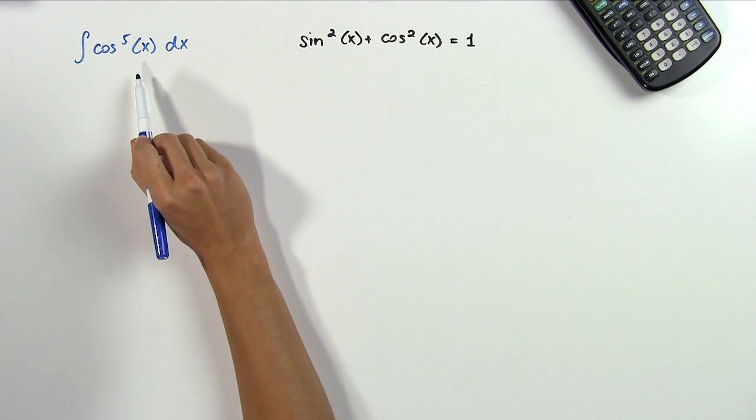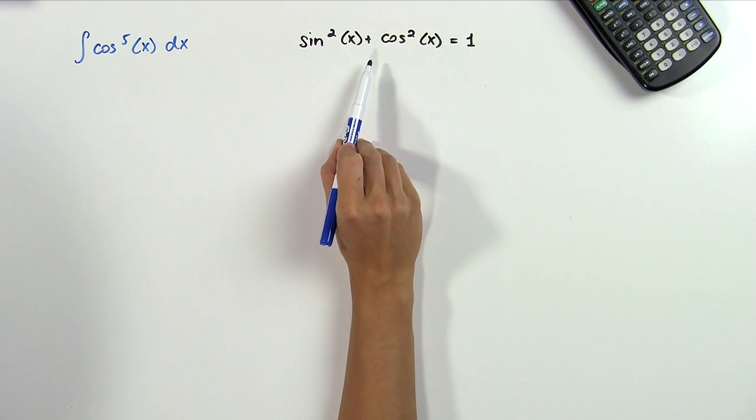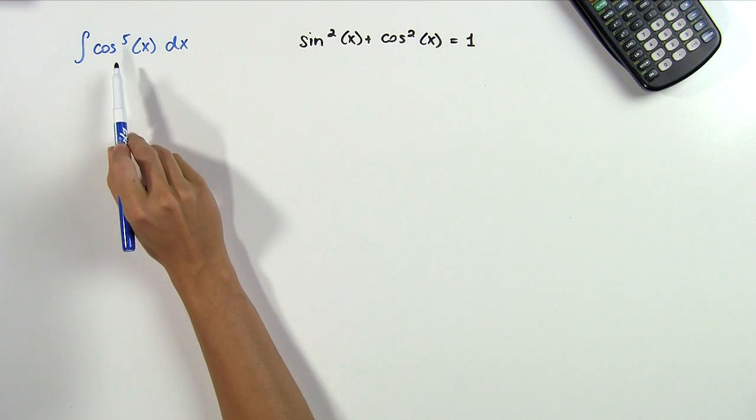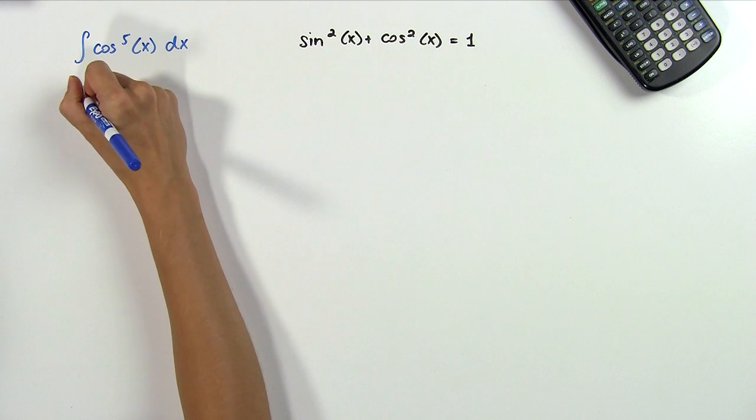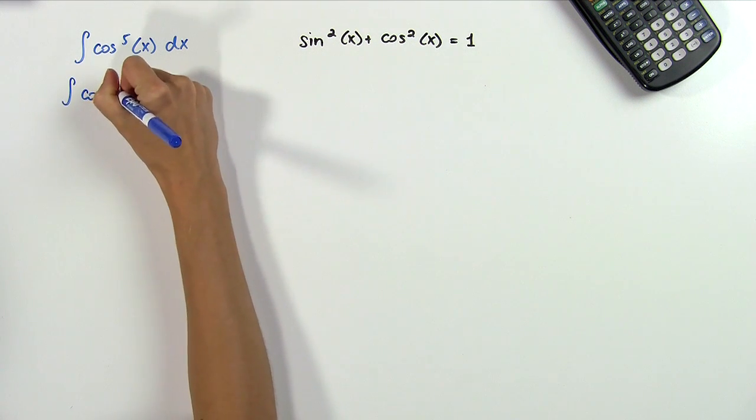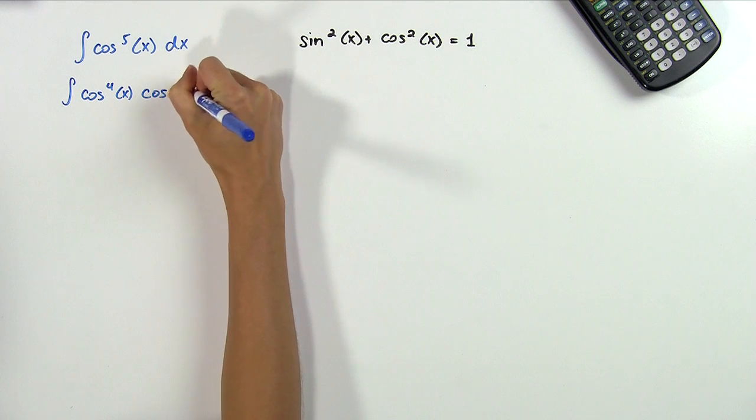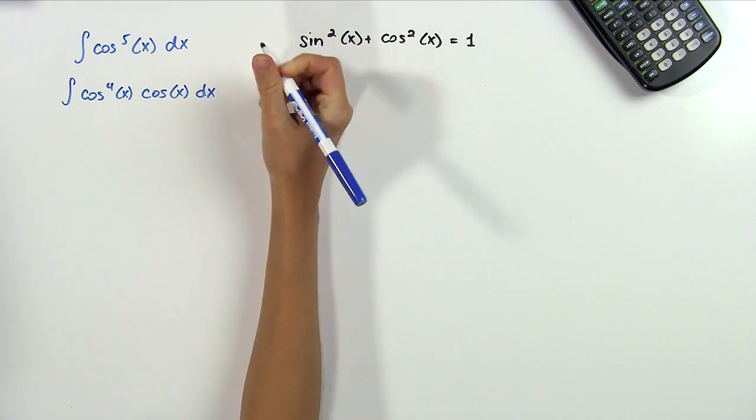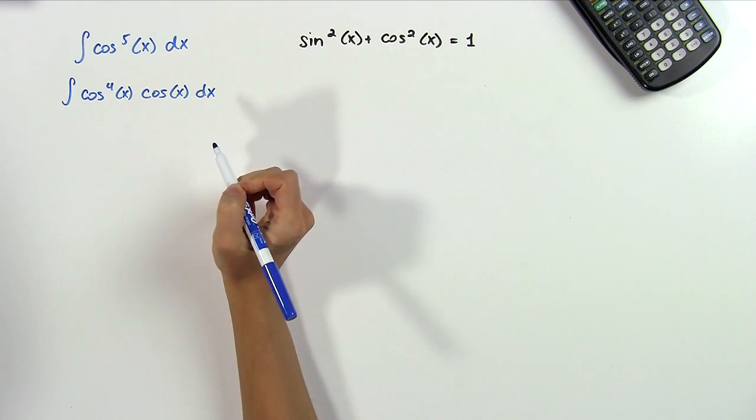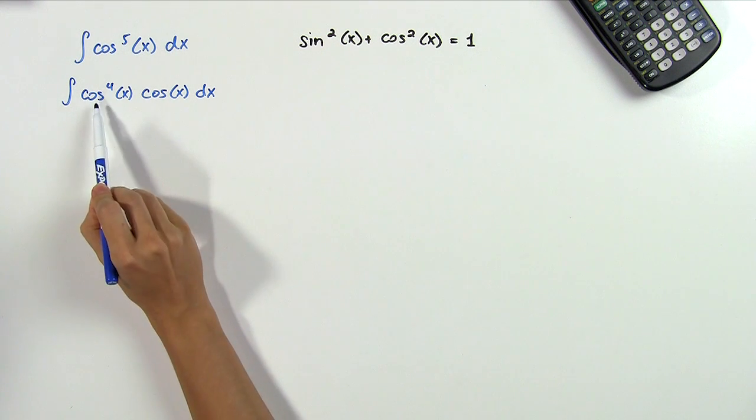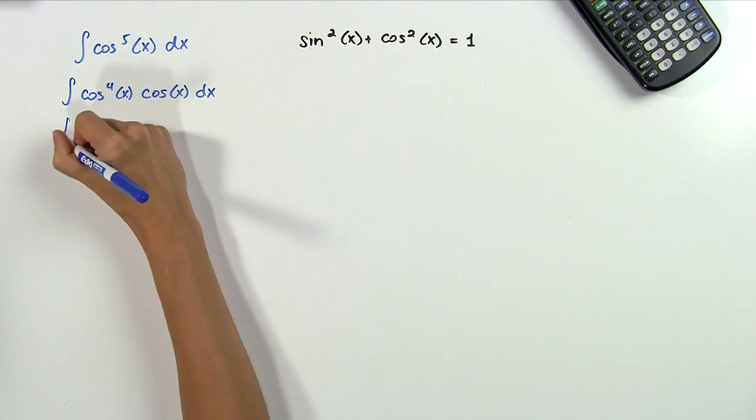So let's get our integral down to a form where we can use this. We'll want cosine squared x in it. We can do this by first separating one of the powers off so that we have an even and an odd power by writing cosine to the fourth power of x times cosine of x dx. And of course this is the same thing as cosine to the fifth power. Now to get cosine squared, we can rewrite this cosine to the fourth power as cosine squared all squared, like this.